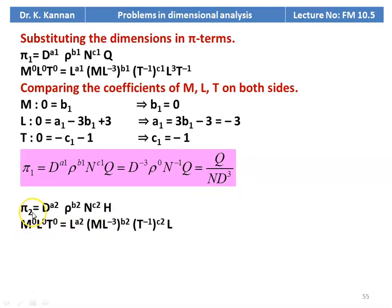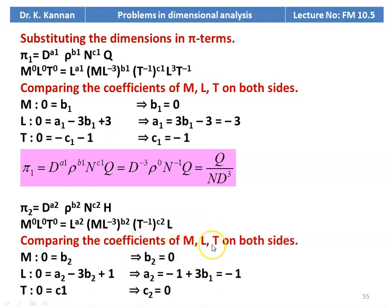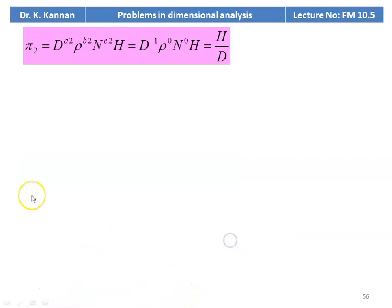For pi2: M⁰L⁰T⁰ = L^a2 · (ML⁻³)^b2 · (T⁻¹)^c2 · L. Comparing: b2 = 0, c2 = 0, a2 = −1. Therefore pi2 = d⁻¹ · rho⁰ · n⁰ · h = h / d.